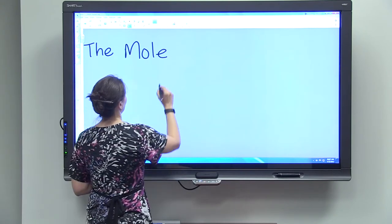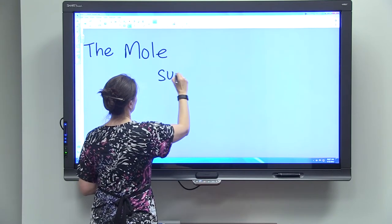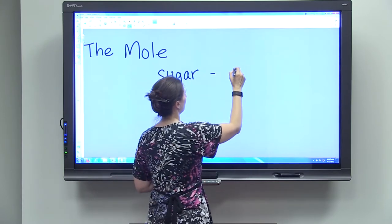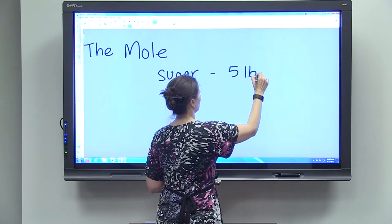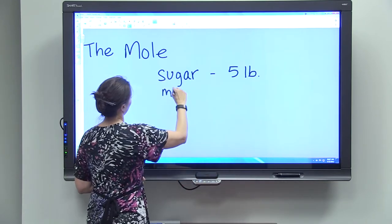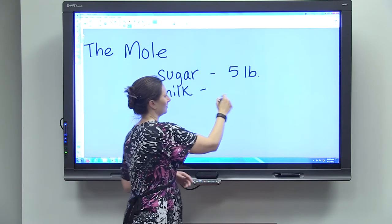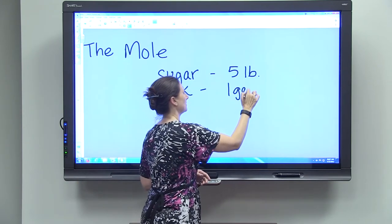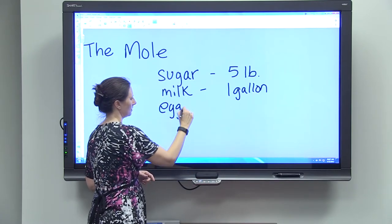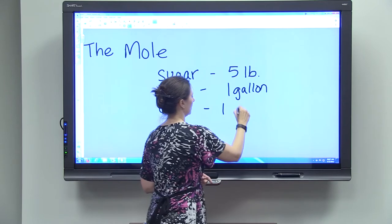If you have sugar in the grocery store, you're going to measure that by the pound. So you might buy a five pound bag of sugar. If you've got milk in the grocery store, you might have a gallon. And if you've got eggs in the grocery store, you're going to have a dozen.